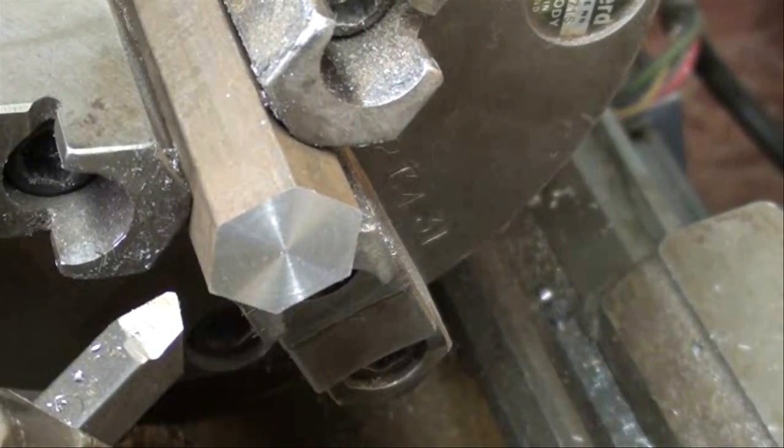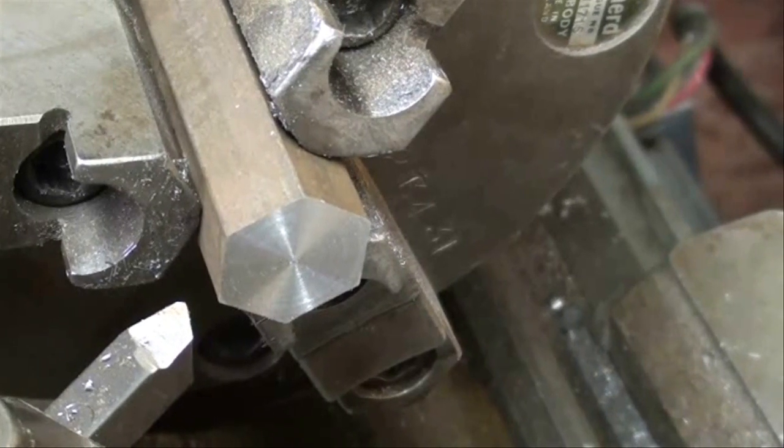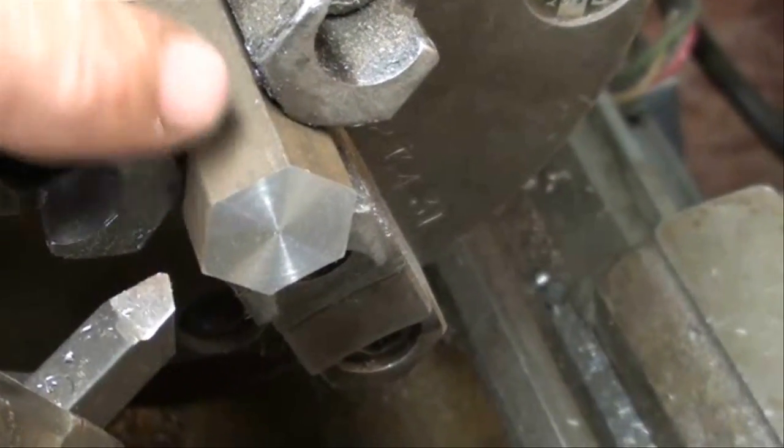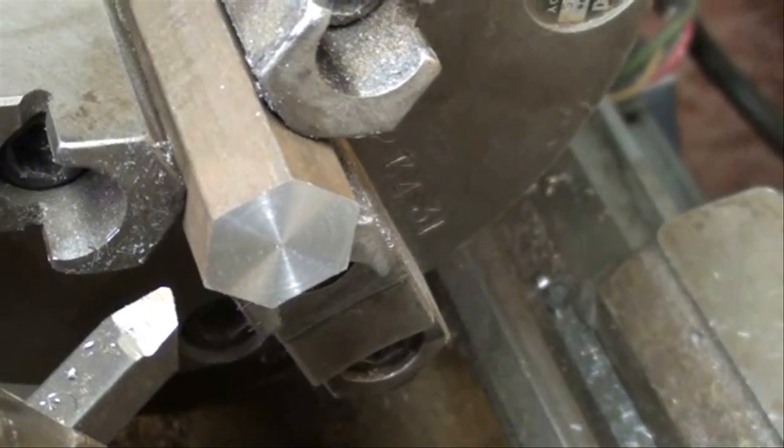Now we're going to break that corner with a file. Be very careful when filing on a lathe that you know we're near the chuck jaws. That gives it a finished look rather than the sharp corners. I have to set the camera down so I'm not going to show you.